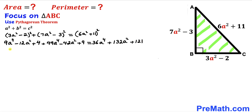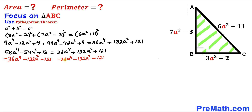Now we combine like terms on the left-hand side to get 58a⁴ − 54a² + 13, which equals 36a⁴ + 132a² + 121. Subtracting 36a⁴ + 132a² + 121 from both sides, those terms cancel, leaving us with 22a⁴ − 186a² − 108 = 0.